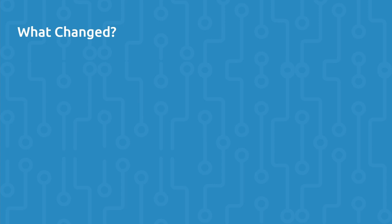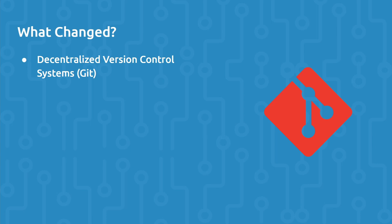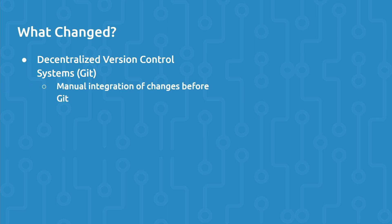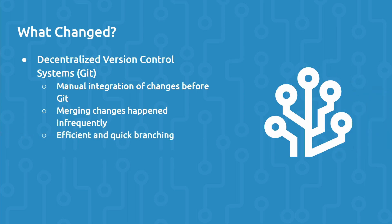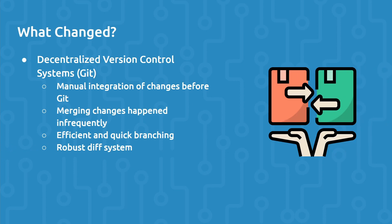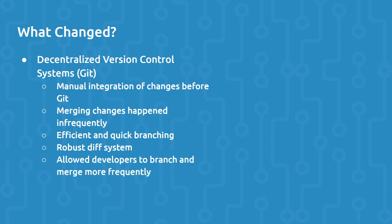The next technological improvement is decentralized version control systems, specifically Git. Centralized version control systems often required a lot of manual integration of feature branches into release branches. Engineers did not frequently merge changes and they worked on their branches for a long time, meaning when it came to merge, there was a lot of changes to merge. The Git version control system offered efficient and quick branching, and merging branches was a lot easier with Git's diffing system. You could also back up local changes to the remote repository. The benefits of Git allowed developers to branch and merge changes more frequently, and merging small chunks of code changes frequently made integration of changes easier.